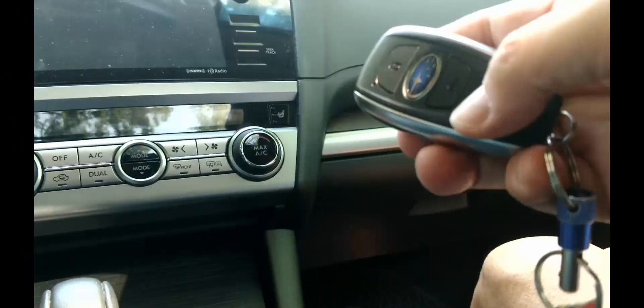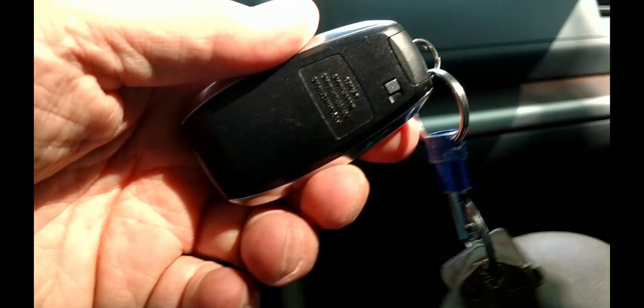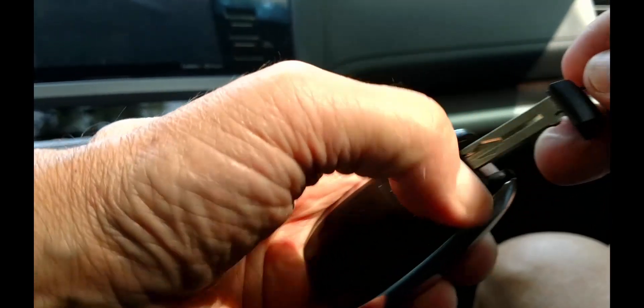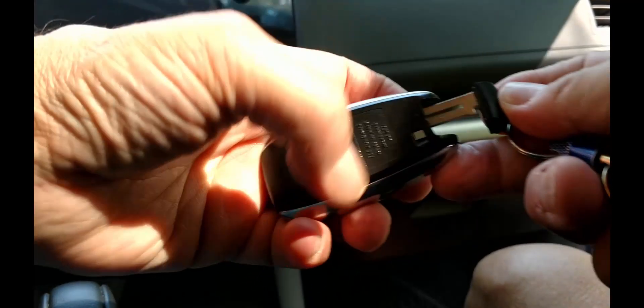First, we'll need to remove the mechanical key. Look for this small button on the back of the fob. It looks for all the world like it will slide to the side, but it will not. It's a push button that's rather difficult for larger fingers or thumbs. Pull the key ring end and we have the key.